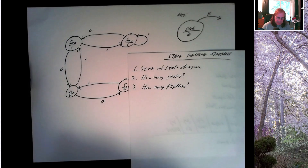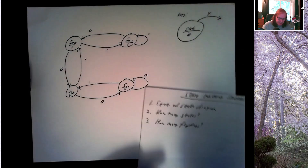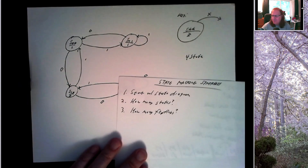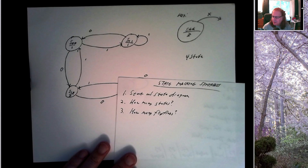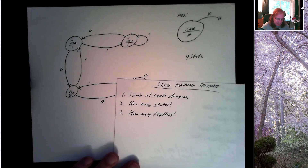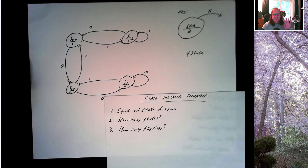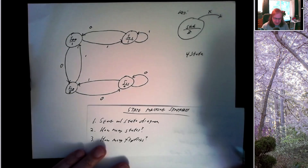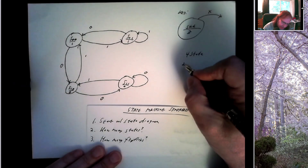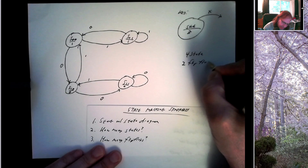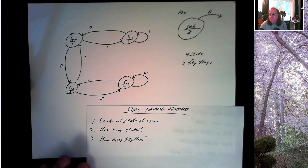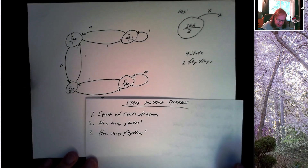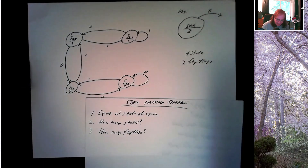We start with a state diagram and see how many states we have — that's four. How many flip-flops? If we have two flip-flops, we can represent four different states, because two bits — one per flip-flop — gives us four combinations. So we'll use two flip-flops, though we will see cases where we might want more than two flip-flops to represent four states, which we'll cover in another class.